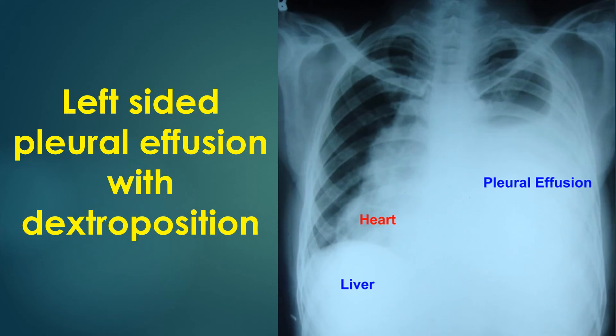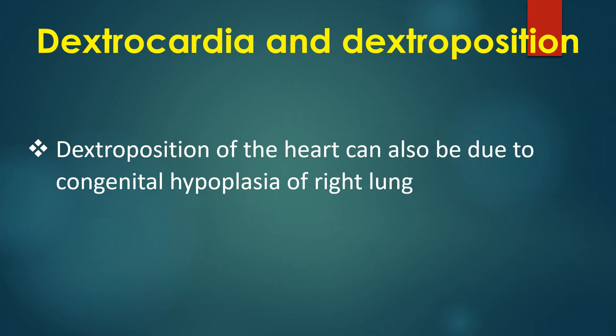In this chest X-ray, there is massive pleural effusion on the left side, pushing the heart along with the mediastinum to the right side, producing dextroposition. The higher level of the effusion in the axilla is evident. The liver shadow is on the right side, indicating situs solitus. The stomach air bubble is not clearly visible. Dextroposition of the heart can also be due to congenital hypoplasia of the right lung.